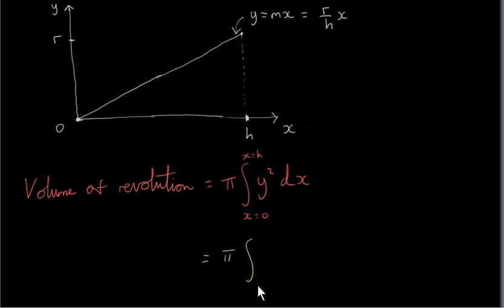We get π times the integral from 0 to H of Y squared. We have to take R over H times X and square it. If we do that, we get R squared over H squared times X squared. R squared over H squared is a constant that can be taken out, so we're integrating X squared with respect to X from X equals 0 to X equals H.